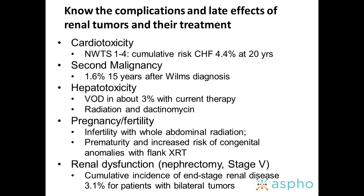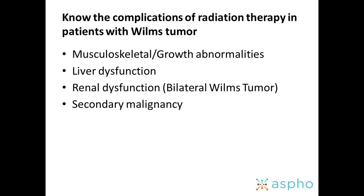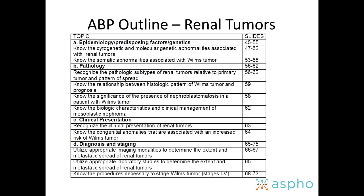Complications of therapy are primarily related to the treatments used: cardiotoxicity for children receiving anthracyclines; secondary malignancy; hepatotoxicity primarily due to dactinomycin and radiation; infertility especially in children requiring whole abdominal radiation; and renal dysfunction especially in bilateral tumor patients with ongoing needs for renal-sparing surgeries. Radiation therapy complications across all tumor types include musculoskeletal growth impairment, liver dysfunction, renal dysfunction, and secondary malignancies. Thank you very much for your attention.